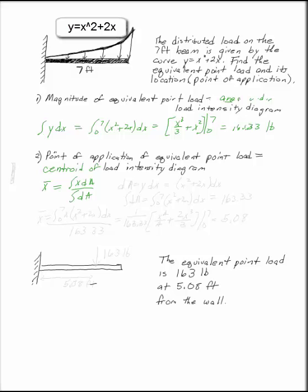In this case, I'm going to use a nice vertical rectangle to do my integration. Its width is dx and its height is going to be equal to y. So dA is equal to x squared plus 2x dx. Now the denominator there is the integral of dA, which is the integral from 0 to 7 of x squared plus 2x dx, which I just did. This is your equivalent point load magnitude, 163.33.